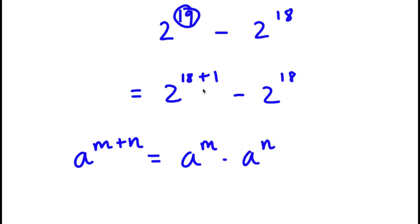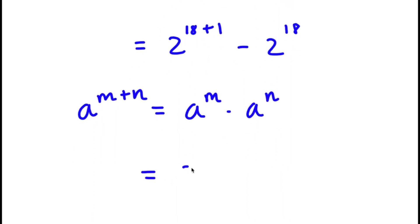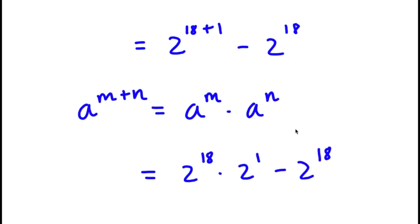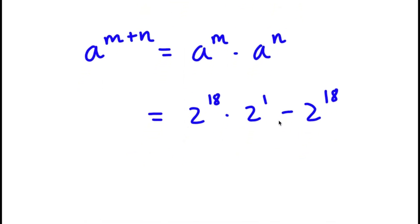So 2 to the power of 18 plus 1, I'm going to write that as 2 to the power of 18 times 2 to the power of 1, and then minus 2 to the power of 18. From here I can simply factor out 2 to the power of 18. So now I have 2 to the power of 18 times 2 to the power of 1 divided by 2 to the power of 18, which is simply just 2 to the power of 1.